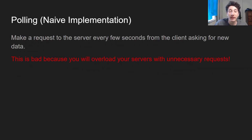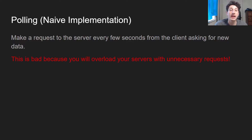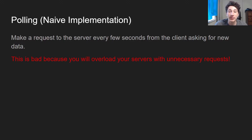So first off, we have polling. This is kind of the naive implementation. As we know, there's something called making HTTP requests — basically any time you're going to go ahead from your client device and make a request to a server. That request could be to get information or to give it new information to put into a database. Polling is basically saying: I'm going to make a GET request to the server every X amount of seconds — so, every five seconds, tell me if this person on Instagram DM'd me back.